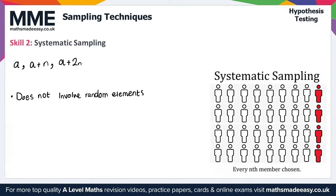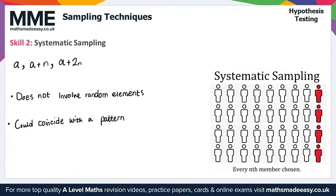However, it does have the disadvantage that this method could coincide with a pattern. For example, this method fails if we sample every five items from a production line but the machine has an error every fifth item — we either find that every item is faulty or none of the items are faulty, when the real fault rate would be 20%. The diagram on the right shows an example of systematic sampling where every Nth member is chosen. That gives us everything we need for skill two on systematic sampling.